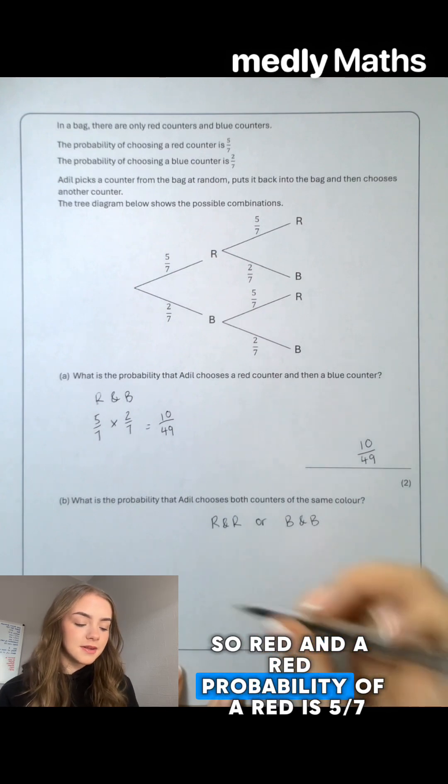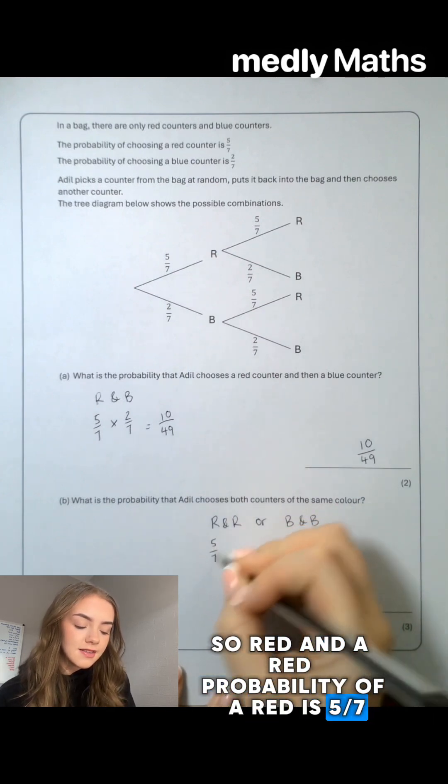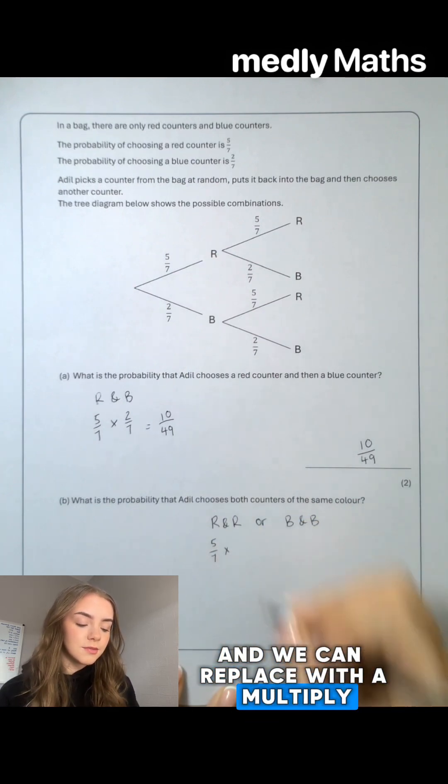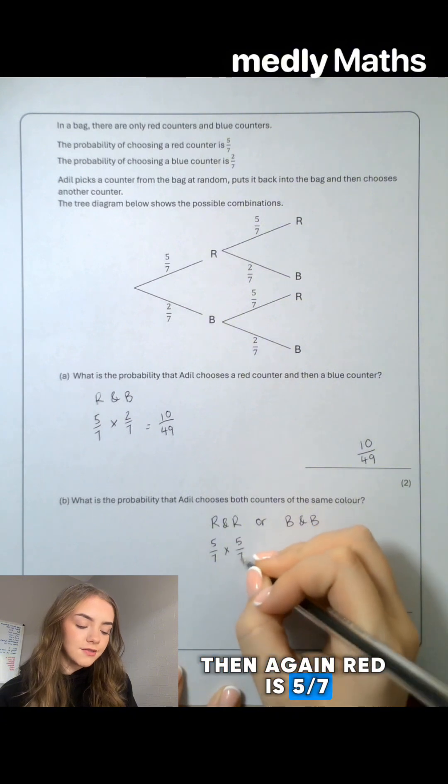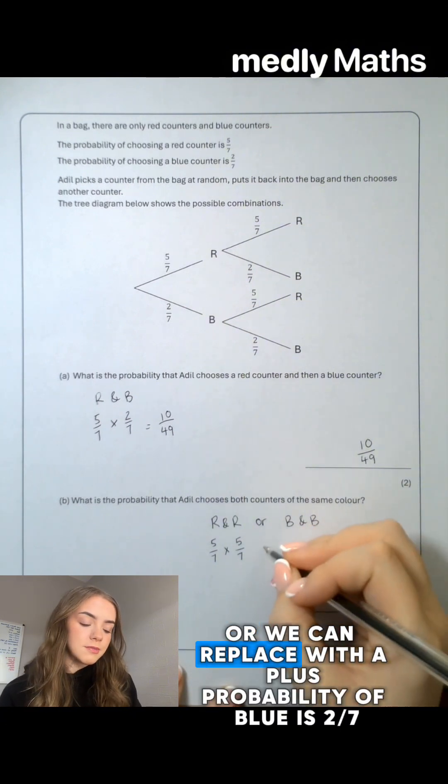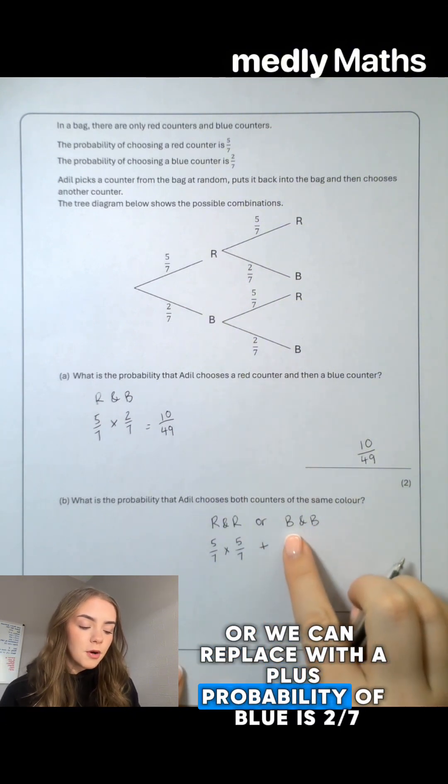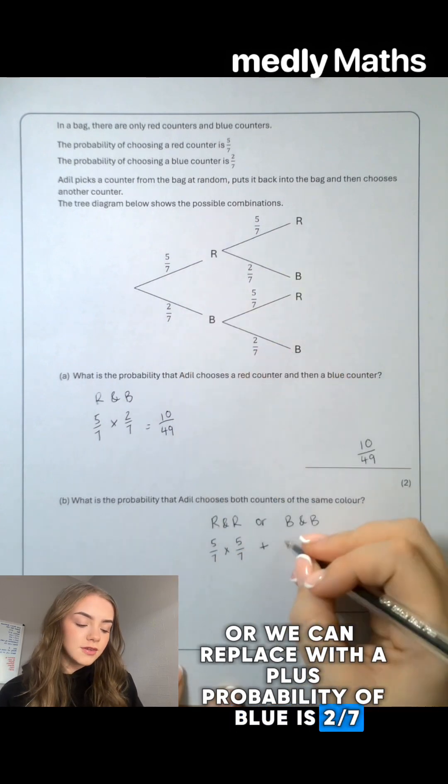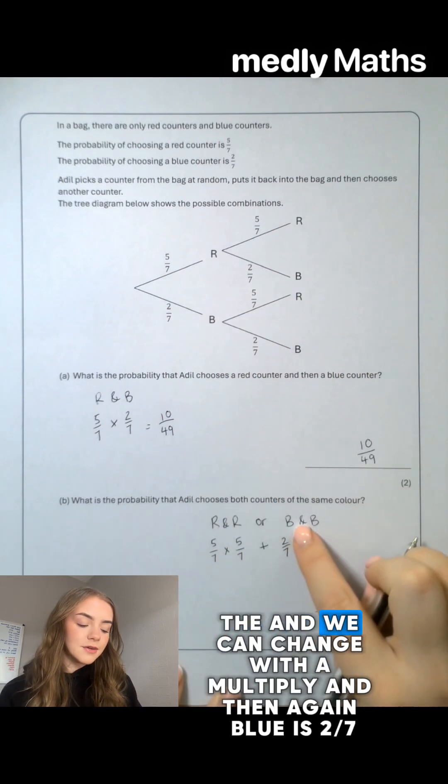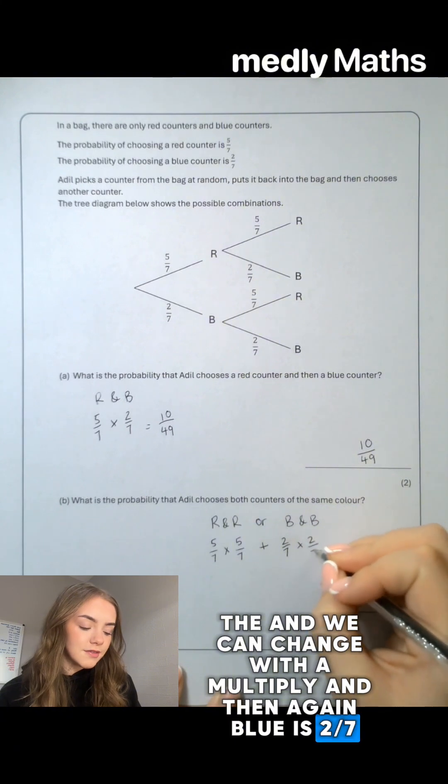So a red and a red. The probability of a red is 5 sevenths and we can replace with a multiply. Then again red is 5 sevenths, or we can replace with a plus. The probability of blue is 2 sevenths. The 'and' we can change with a multiply and then again blue is 2 sevenths.